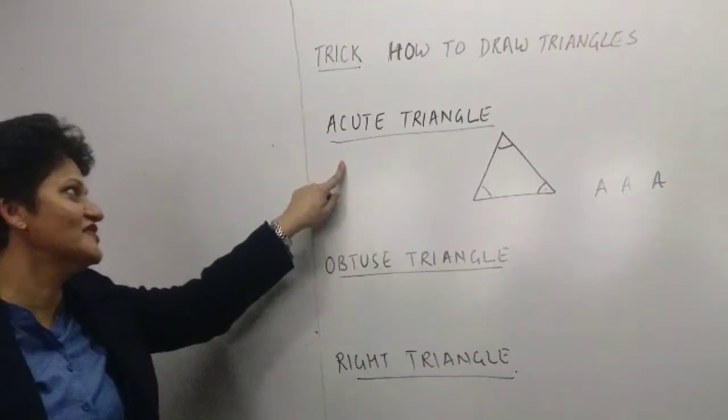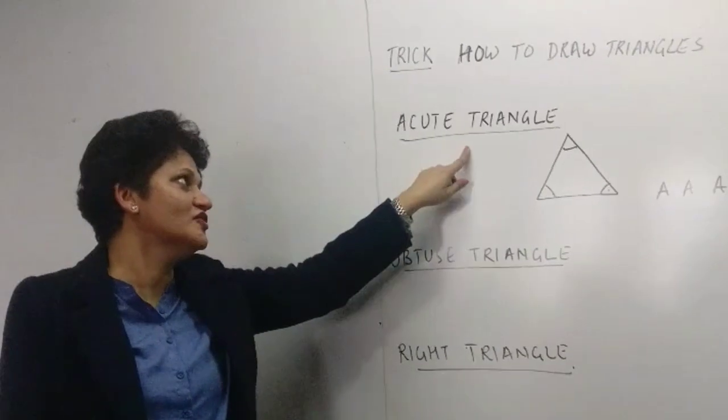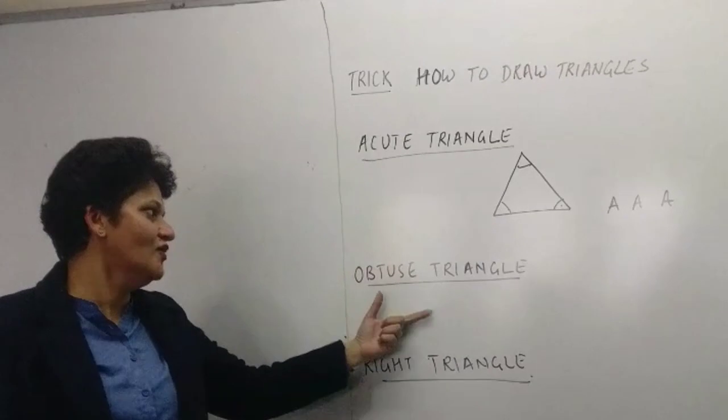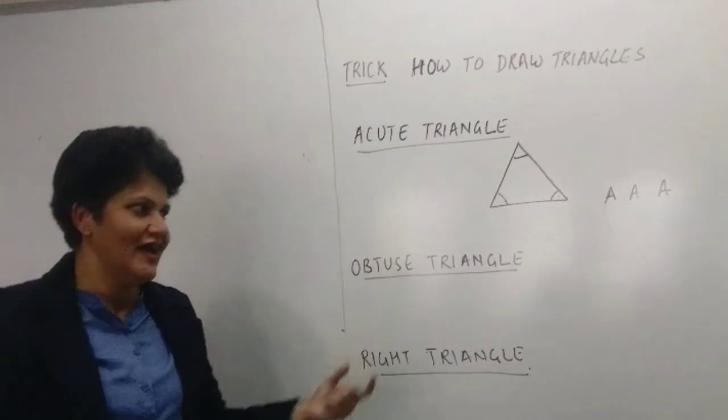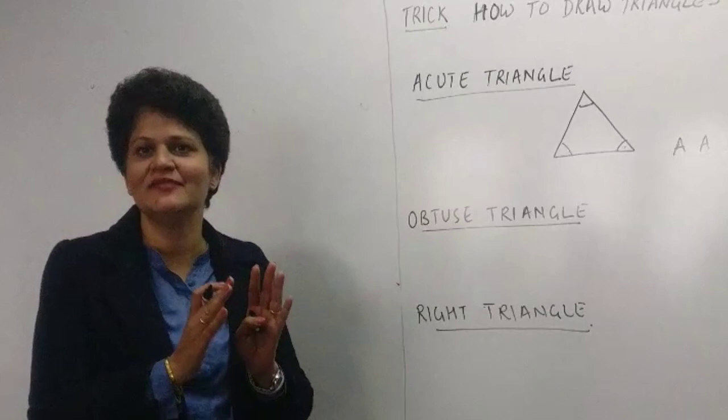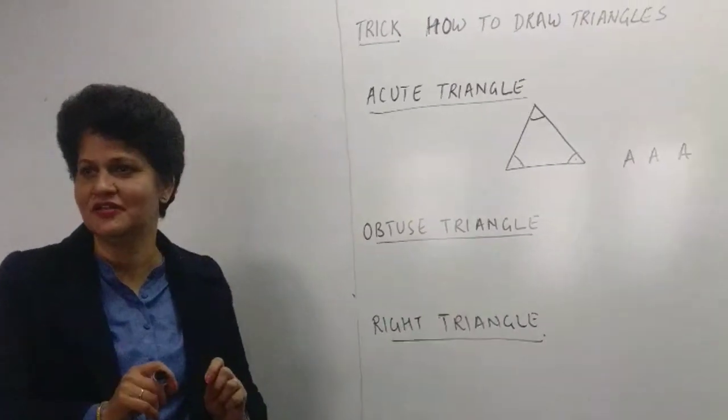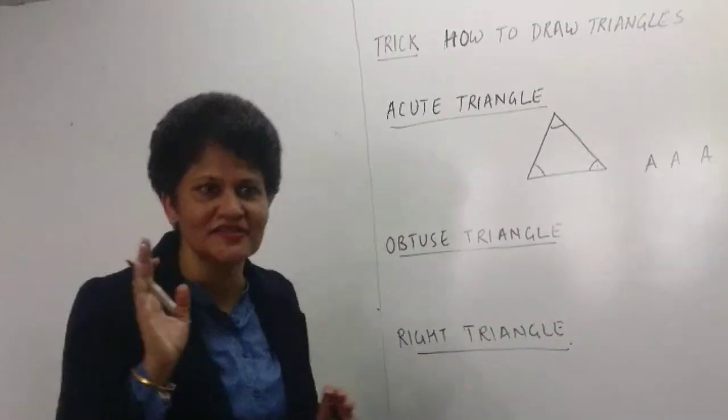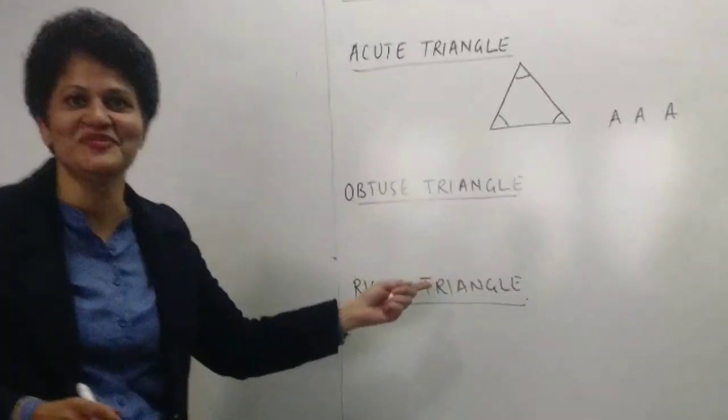So now, this is how we draw an acute triangle. And now we will be learning how to draw an obtuse triangle. And you know that we will be using the same alphabet L that you have been learning. You learned it in class nursery, I think so. We will use the same to draw a triangle.